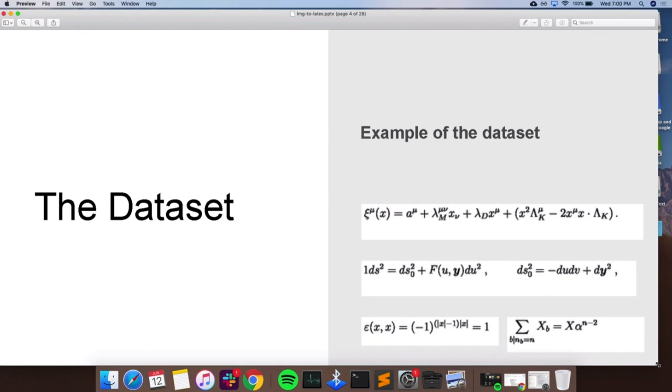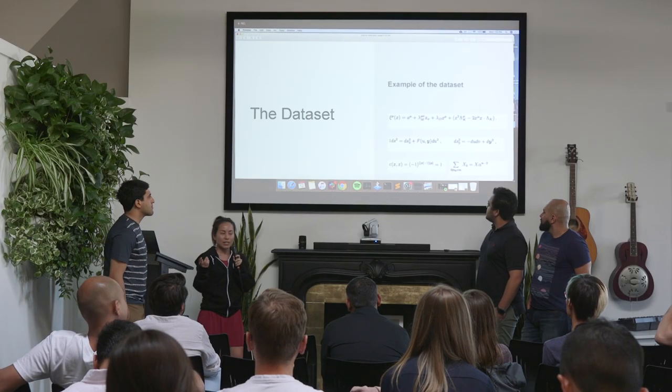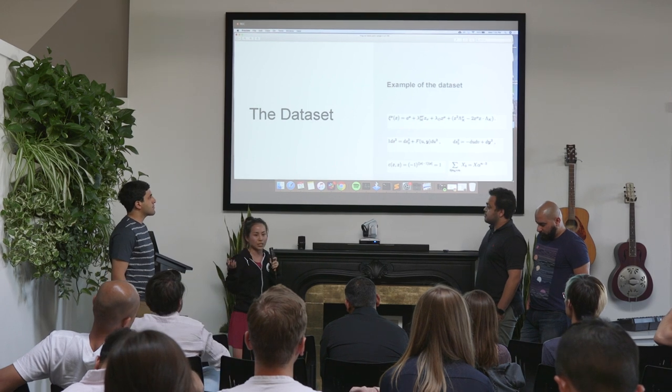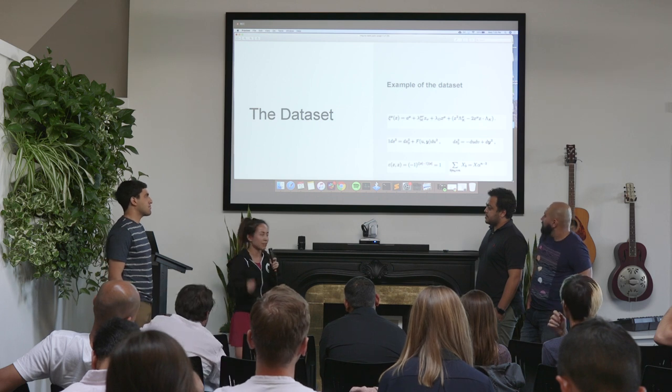The first is of course we need to see if we have a dataset, and lucky for us this is a problem that has been previously worked on and there is free available dataset on the internet you can just download. So that gave us a head start and here are some examples of the dataset. You can see already that our training dataset images are not the same size, but that's not the only characteristic of our dataset. Another thing is they're heavily pre-processed by the prior research team, which turns out to be a great limitation of our model and will be discussed later in the presentation.